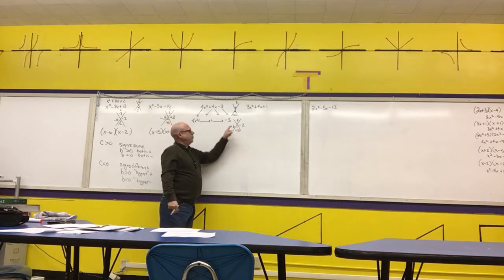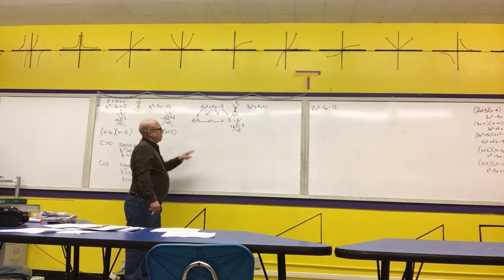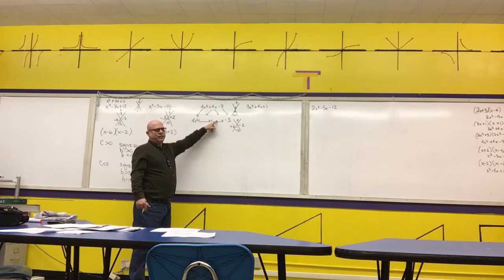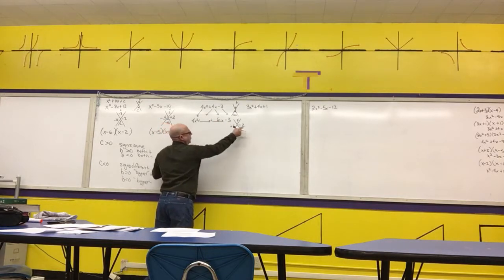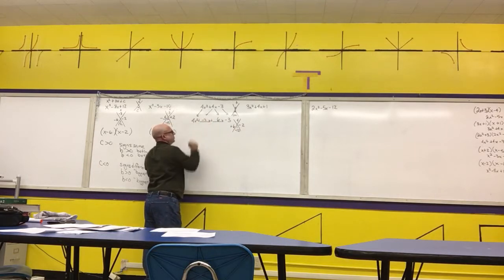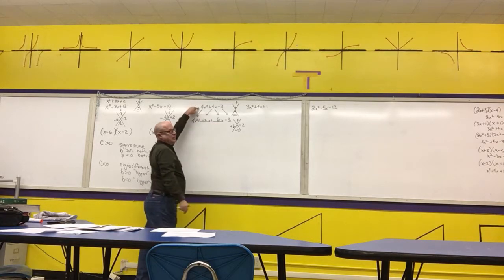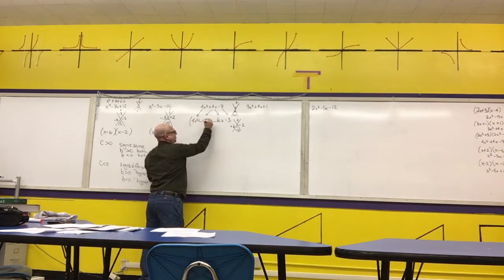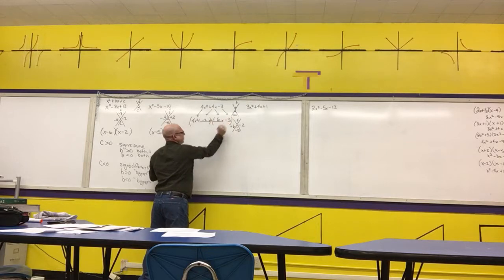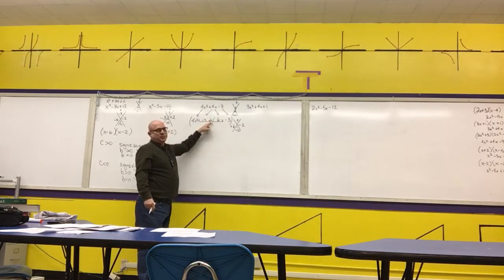Now we take those two numbers and use them to fill in the blanks. We put 6 with the negative 3x term, since both share a factor of 3, and put negative 2 with the other term. If you combine like terms on this line, it matches exactly the line above it. Our next step is to put parentheses around the first two terms and parentheses around the last two terms with a plus sign between them. If the third term has a negative in front, make sure it's inside the parentheses.